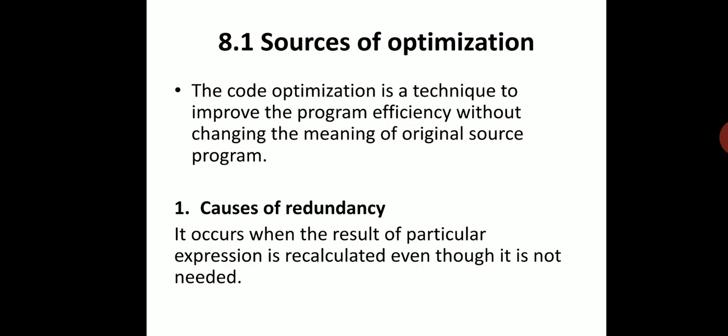Let us begin with the first point: sources of optimization. Before we start, we should know what optimization means and when we can perform it. Optimization is the process of making program execution faster — making the program execute very fast without changing the meaning of the source program. The code optimization is a technique to improve program efficiency without changing the meaning of the original source program.